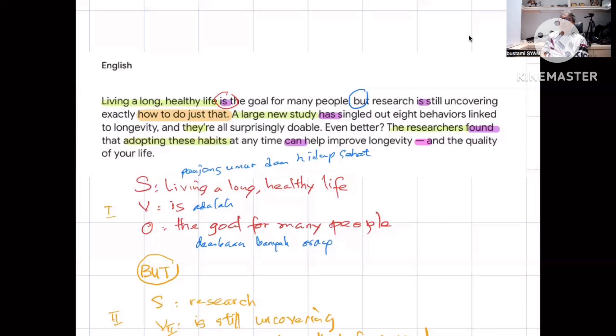'A large new study has singled out eight behaviors linked to longevity, and they are all surprisingly doable.' We see here 'a large new study' is the subject. 'Has singled out' means this sentence, in the learning English my way lesson, we see there's 'has' here, and there's a verb in the fourth form.